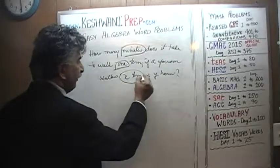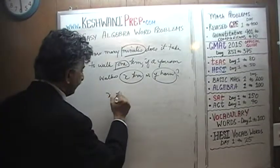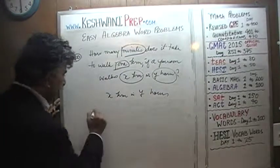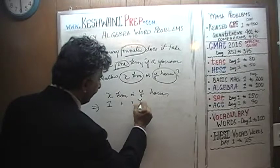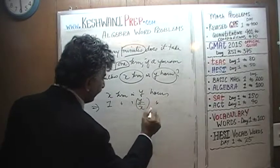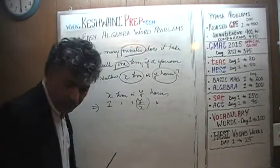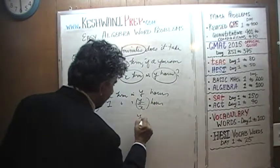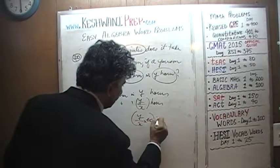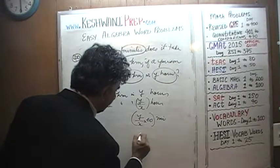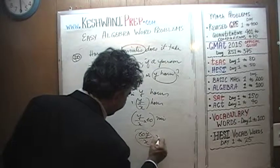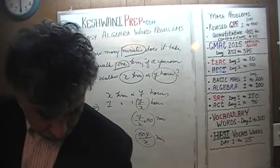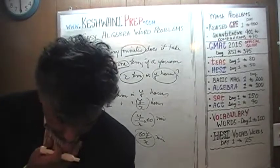What is given: X kilometers in Y hours. That implies we should be able to walk one kilometer in Y over X hours. Y over X hours is the same as Y over X times 60 minutes, or 60Y over X minutes. That's the answer: 60Y over X minutes.